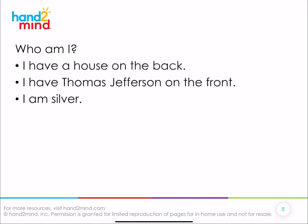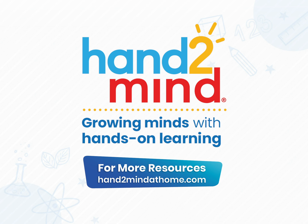Let's try one more. Who am I? I have a house on the back. I have Thomas Jefferson on the front. I am silver. Who am I? That's the nickel. Very good! So today we've been working on identifying our coins based on those attributes. That's going to be really important for us in the future when we start to count our money. If you'd like more activities on identifying coins, please visit handtomind.com. Hope you all have a great rest of the day.